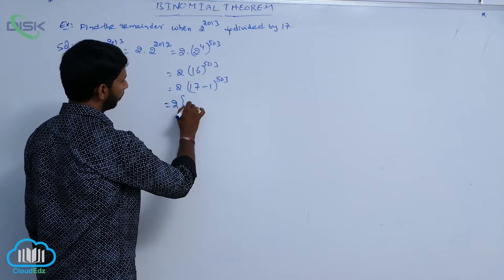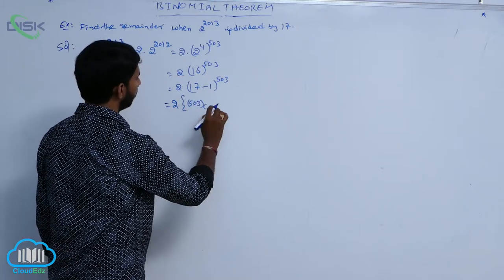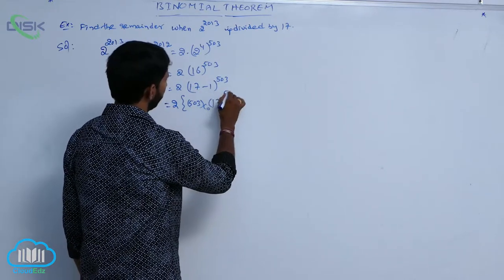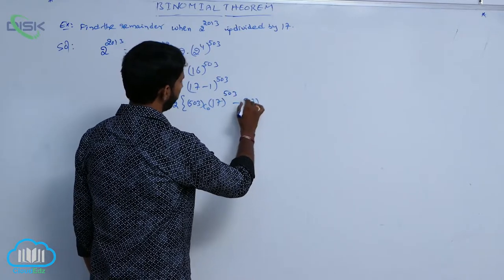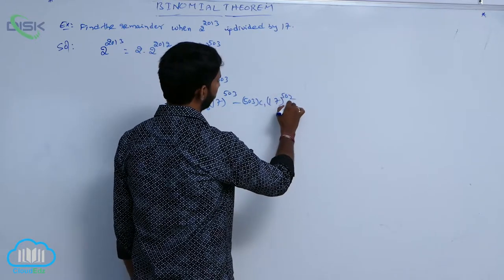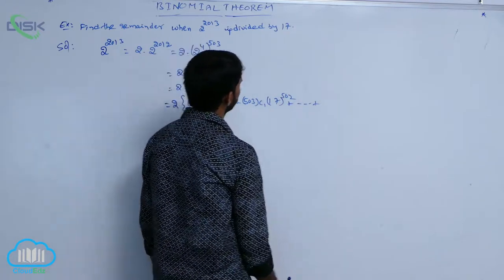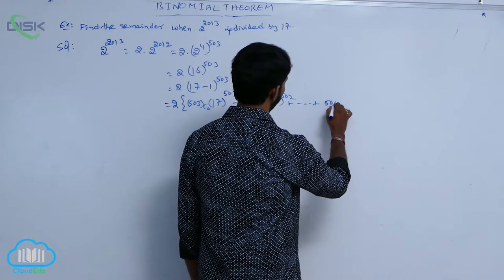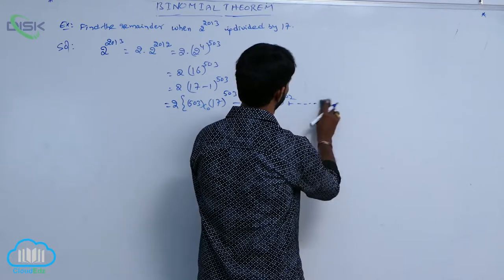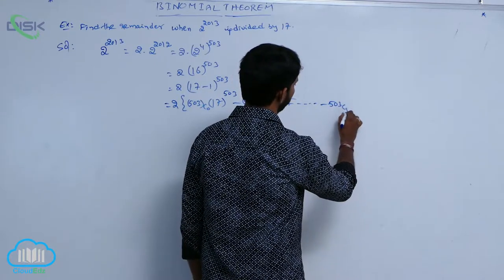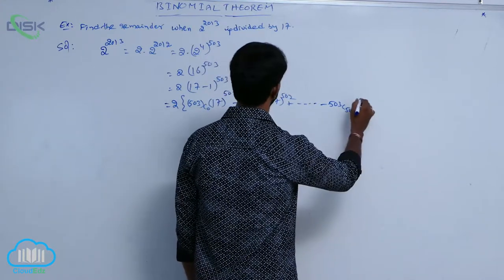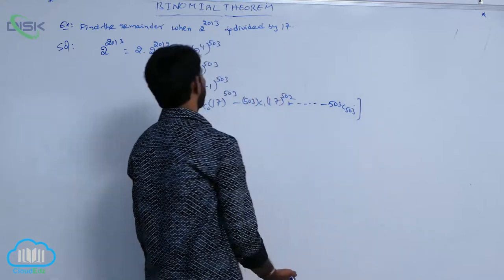Expanding using the binomial theorem: 2 of [503C0 into 17 power 503 minus 503C1 into 17 power 502 plus and so on, plus 503C503 into (-1) power 503].